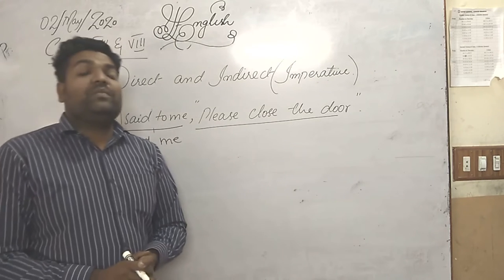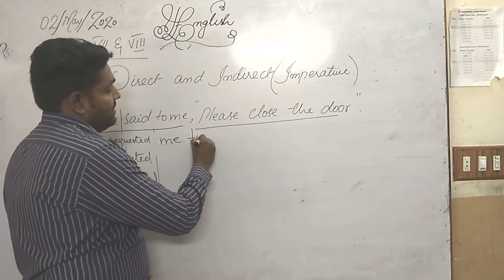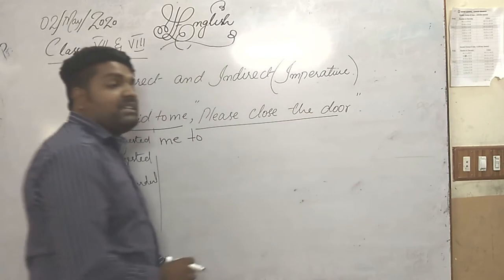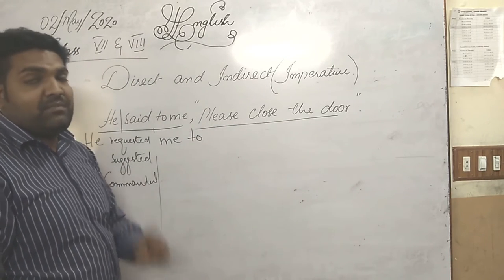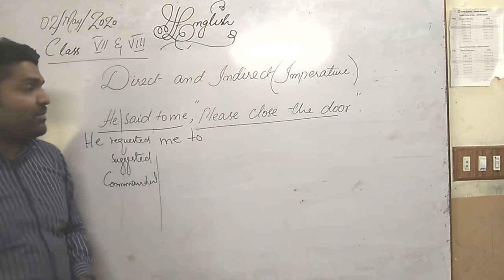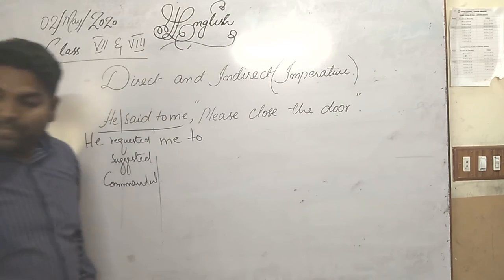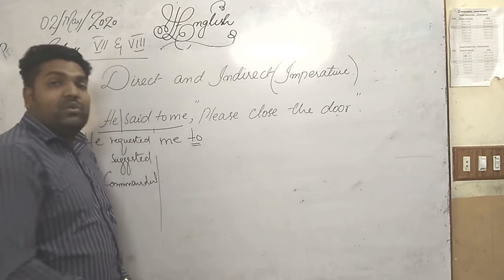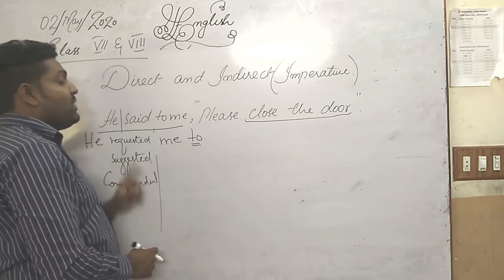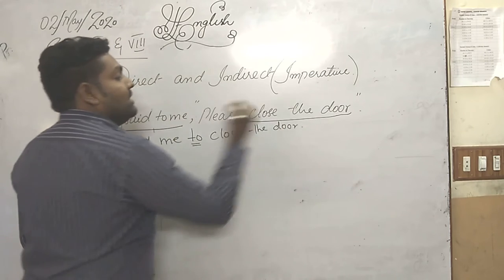Now, to join these sentences, what we use? To join these sentences, we use to. He requested me to. The remaining sentence will be changed. No, it will remain same. It will not be like, closed the door. Because in indirect sentence, we are using always first form of verb. After the to, use the statement which is written or enclosed in the inverted comma. He requested me to close the door.